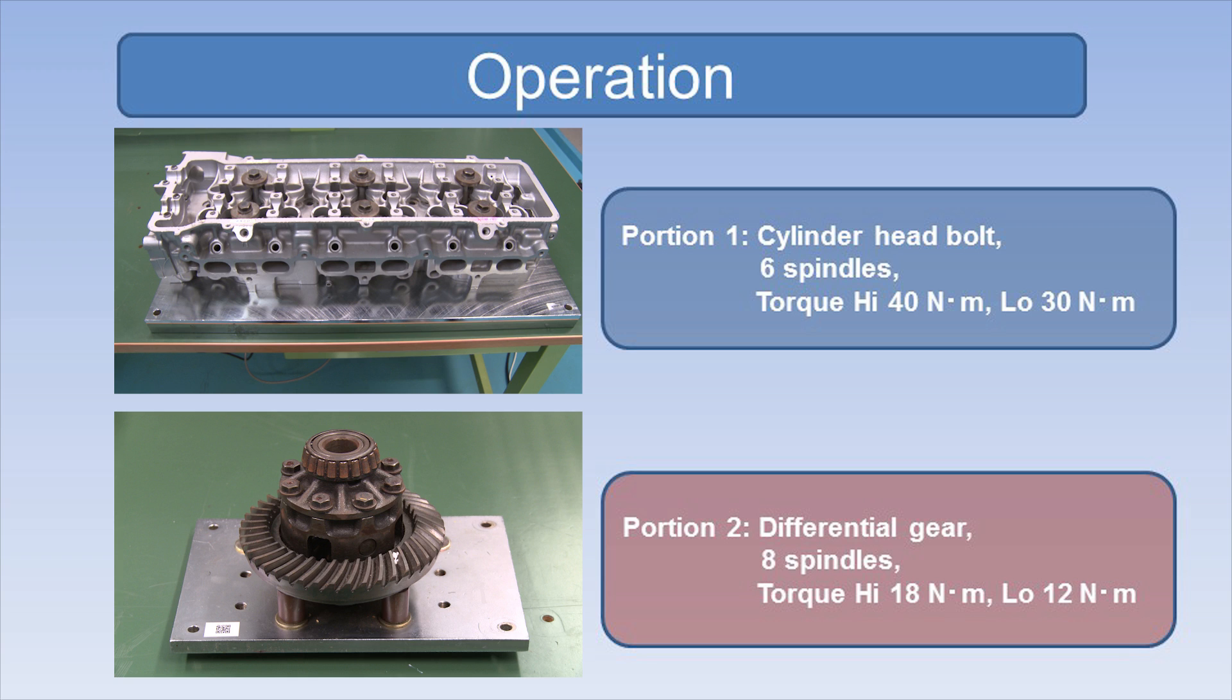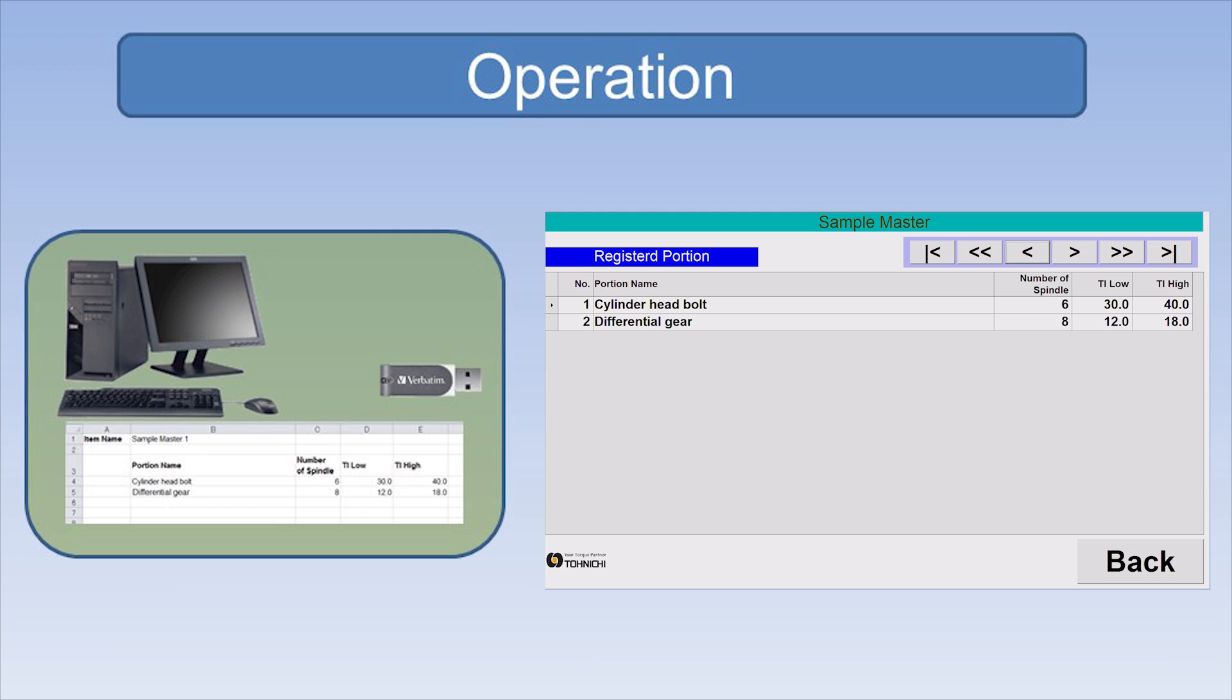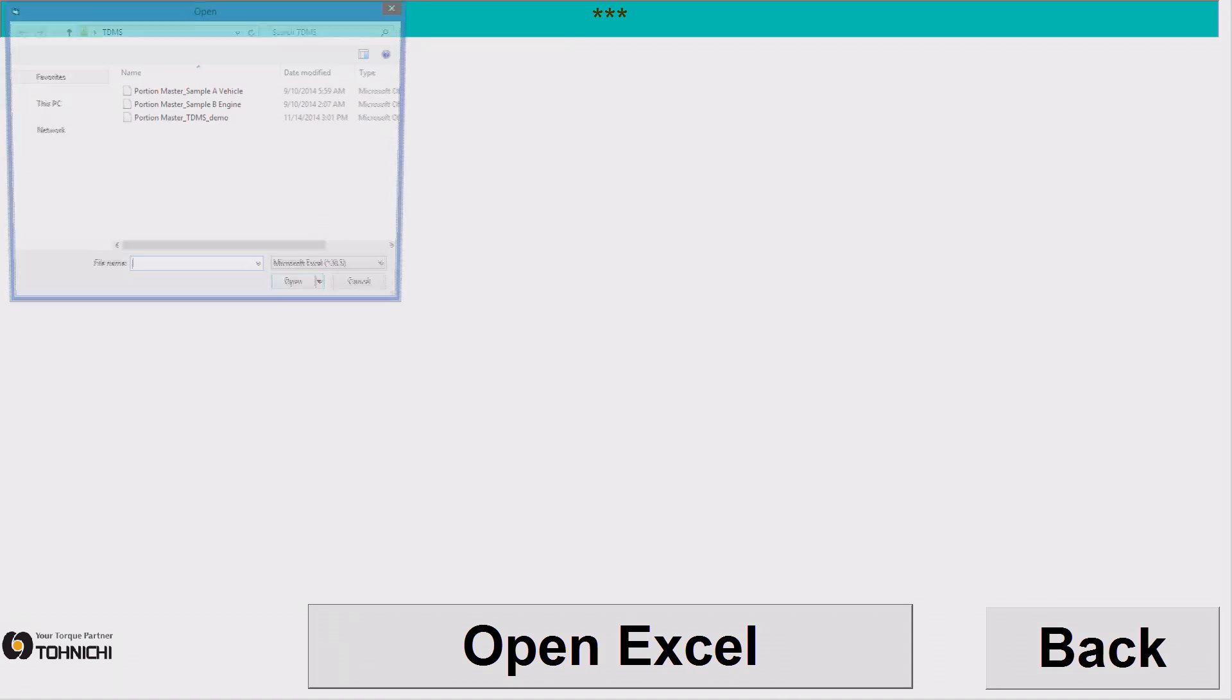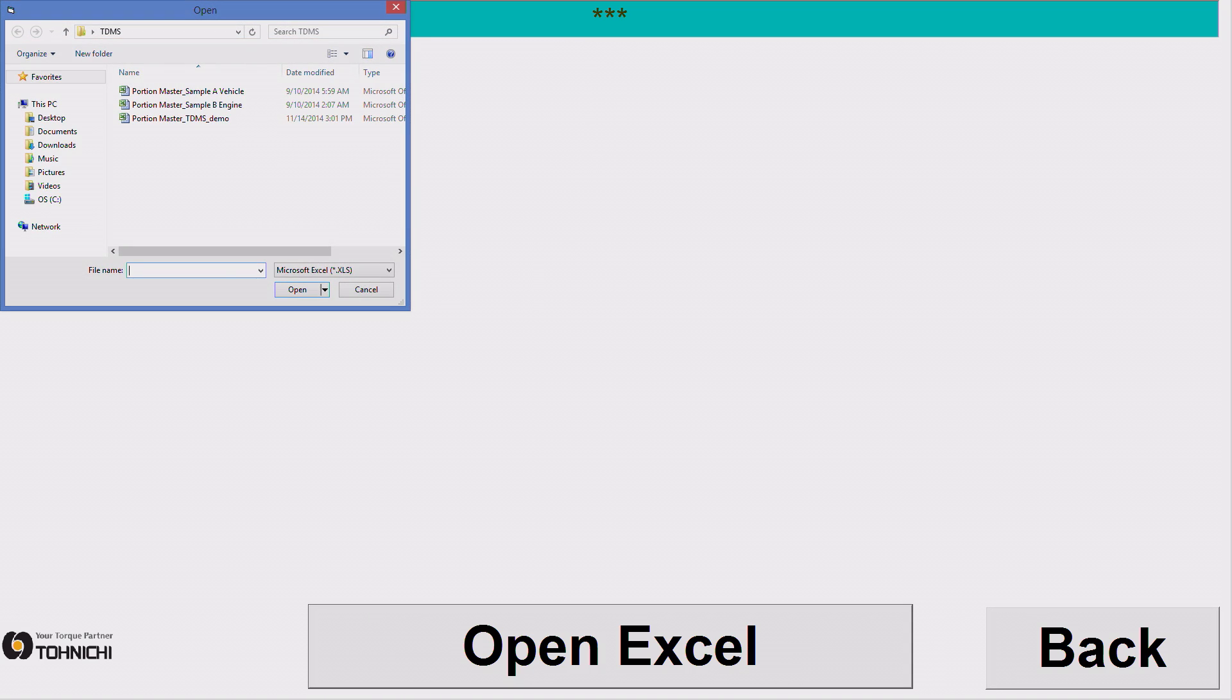Now to start the demonstration of TDMS according to the process shown on the display. First, prepare a portion master data for your operation process by Excel and save it to a portable device. Press portion registration key on the main menu for uploading the master data and then press measurement to start operation.